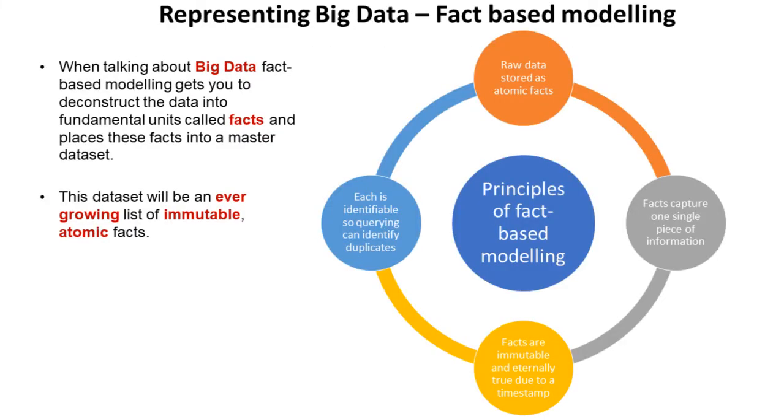So these are the principles then of fact-based modeling. The raw data as we've said is stored as atomic facts. We never have more than one fact stored together. Facts capture one single piece of information. These facts are immutable and they're eternal and this is due to a timestamp. So the facts can't change and when they're entered you give them a timestamp. And each fact is easily identifiable by the timestamp. And what this means is by querying we can easily find duplicates.